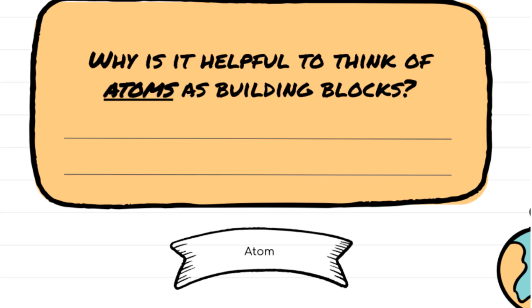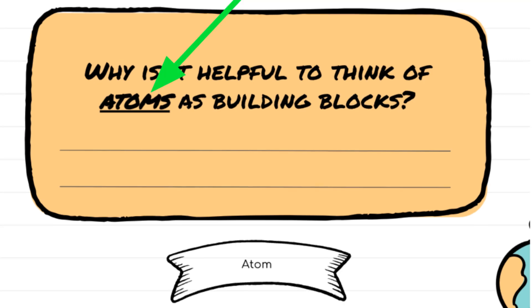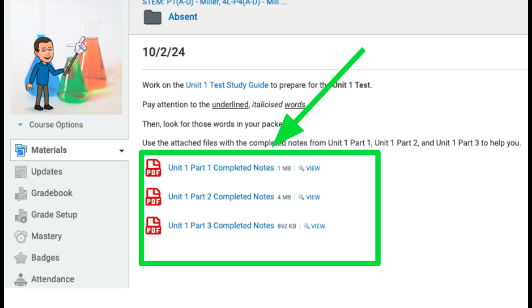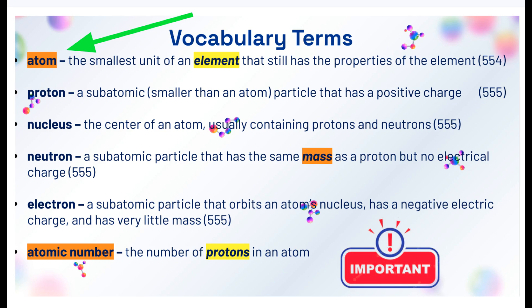When you are working on the study guide, look at the underlined and bolded words in the questions. Search for these words in the provided packets. When you open up the packet, scroll through until you find what you are looking for.